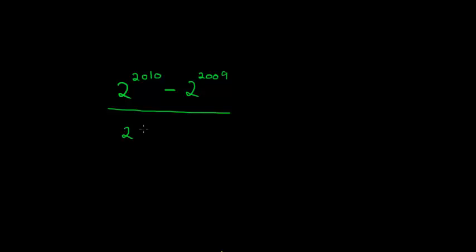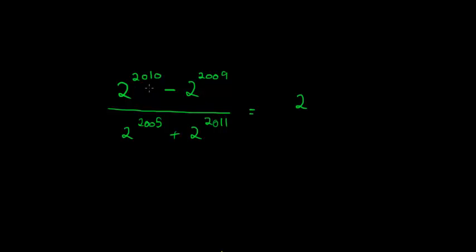Let's do an example: 2 to the power of 2010 minus 2 to the power of 2009, divided by 2 to the power of 2005 plus 2 to the power of 2011. Notice I have more than one term in both the numerator and denominator, so I cannot just subtract exponents directly. I'll have to factorize first. The way to factorize these is to apply the reverse of the exponent laws.